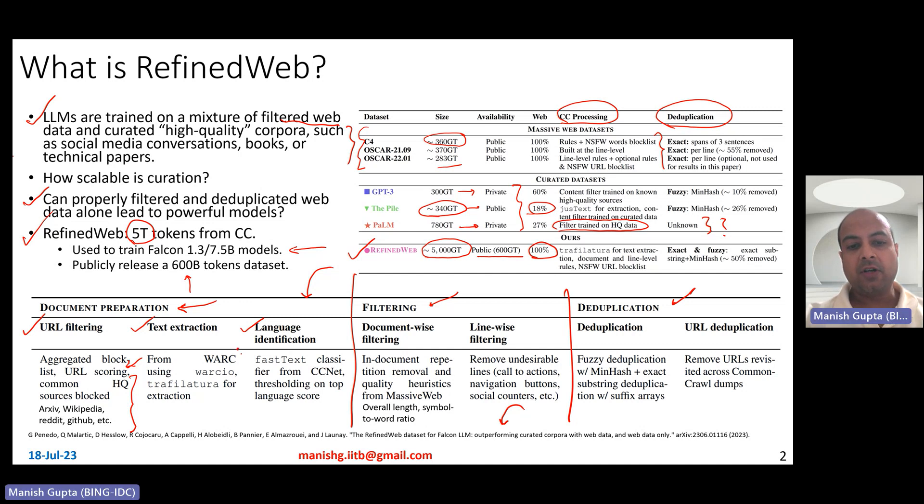Text extraction part. The common crawl corpus is available in two different formats. One is called the WARC format, the other is called the WET format. WARC format is the HTML format. WET format is basically text extracted from those HTML files. However, what they found was that text extraction was not up to the mark, and therefore they actually just used the WARC format, and they used the WARCIO Python library. They also used this other Python library for extracting the text from these HTML web pages. Language identification - they mainly focused on English, and therefore they essentially used the fast text classifier trained on 176 different languages from CCNET so as to essentially take only those web pages where the dominant language has probability greater than 0.6.